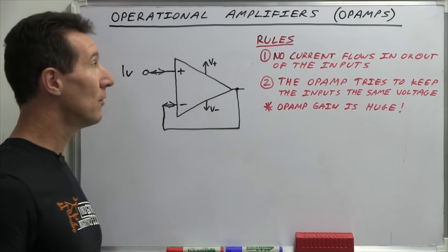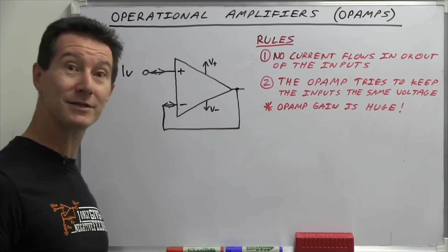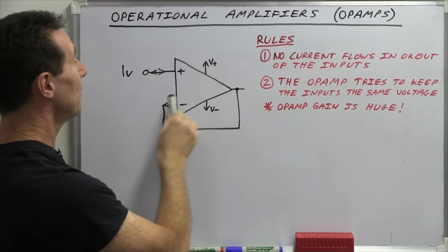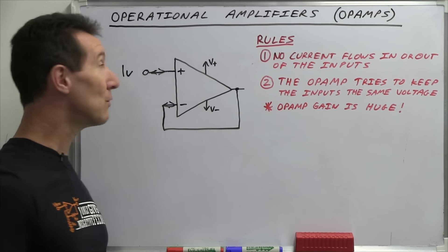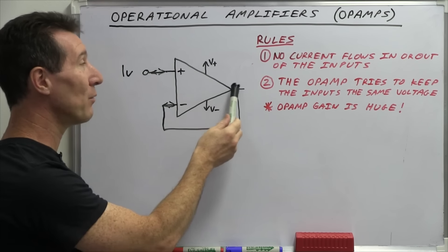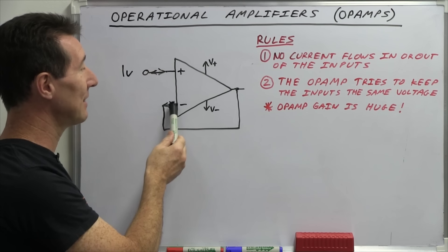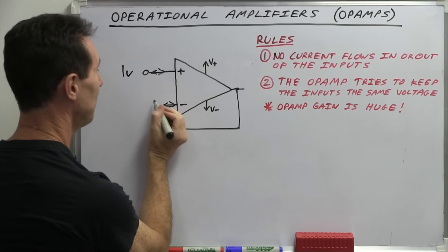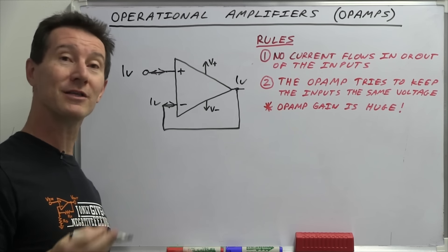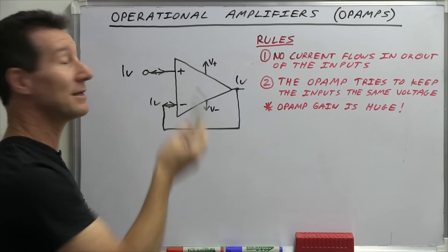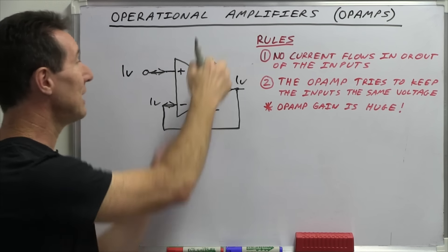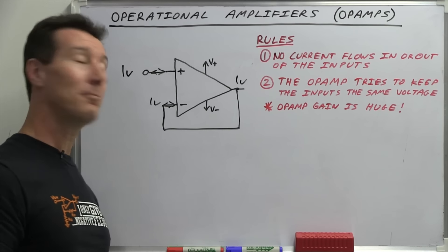We're feeding one volt into our non-inverting input. What do we get on the output? Well, rule number two always applies when you've got feedback in a circuit. The op amp tries to keep these two input voltages identical. So this inverting input here is going to be equal to this non-inverting pin. The op amp will ensure that by driving this output to get this input to match. So if we've got one volt here, we've got one volt here. Because it's just connected by a bit of wire, we're going to get one volt out. That's why it's called a buffer — it's not an amplifier, because there is no gain. One volt in, one volt out.